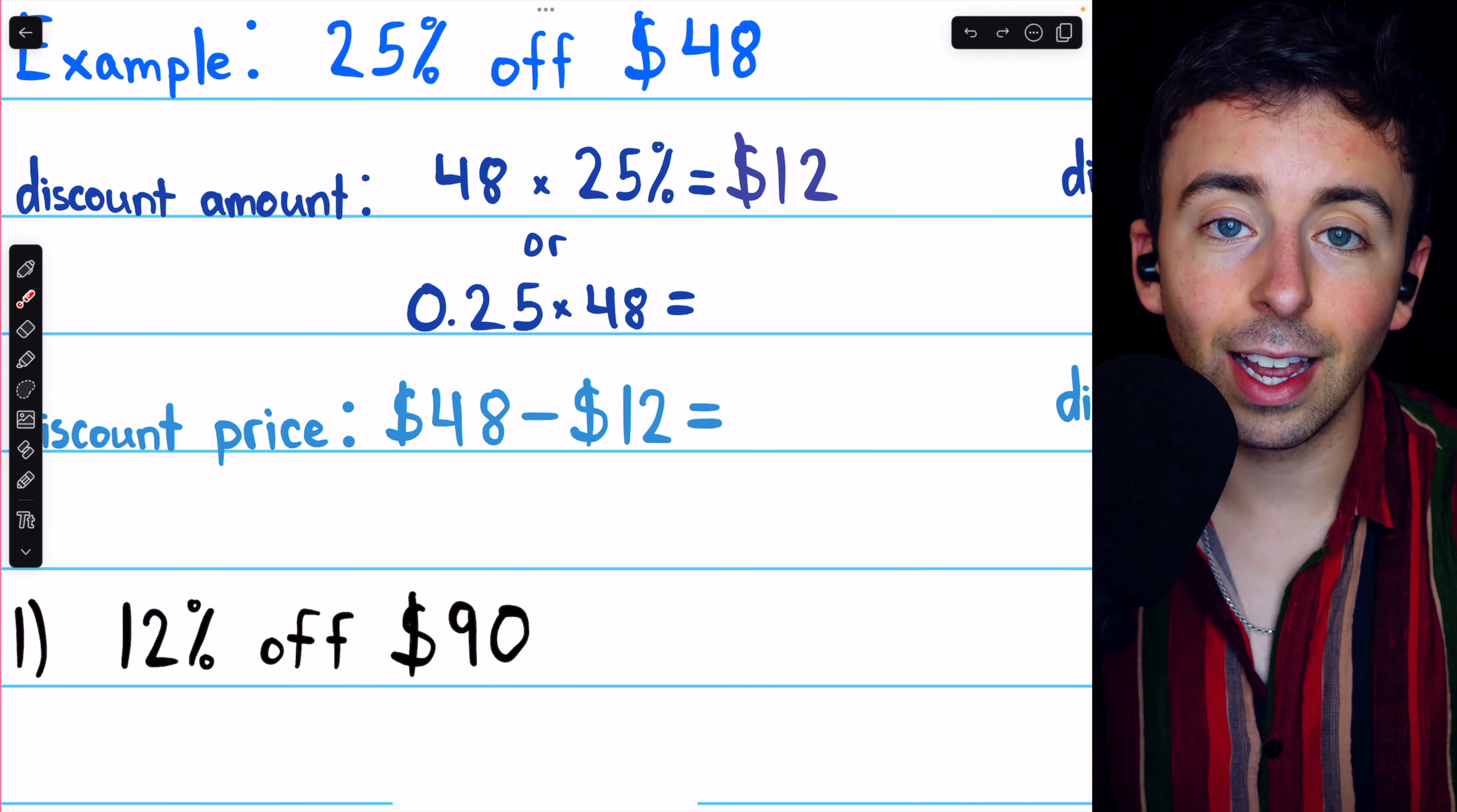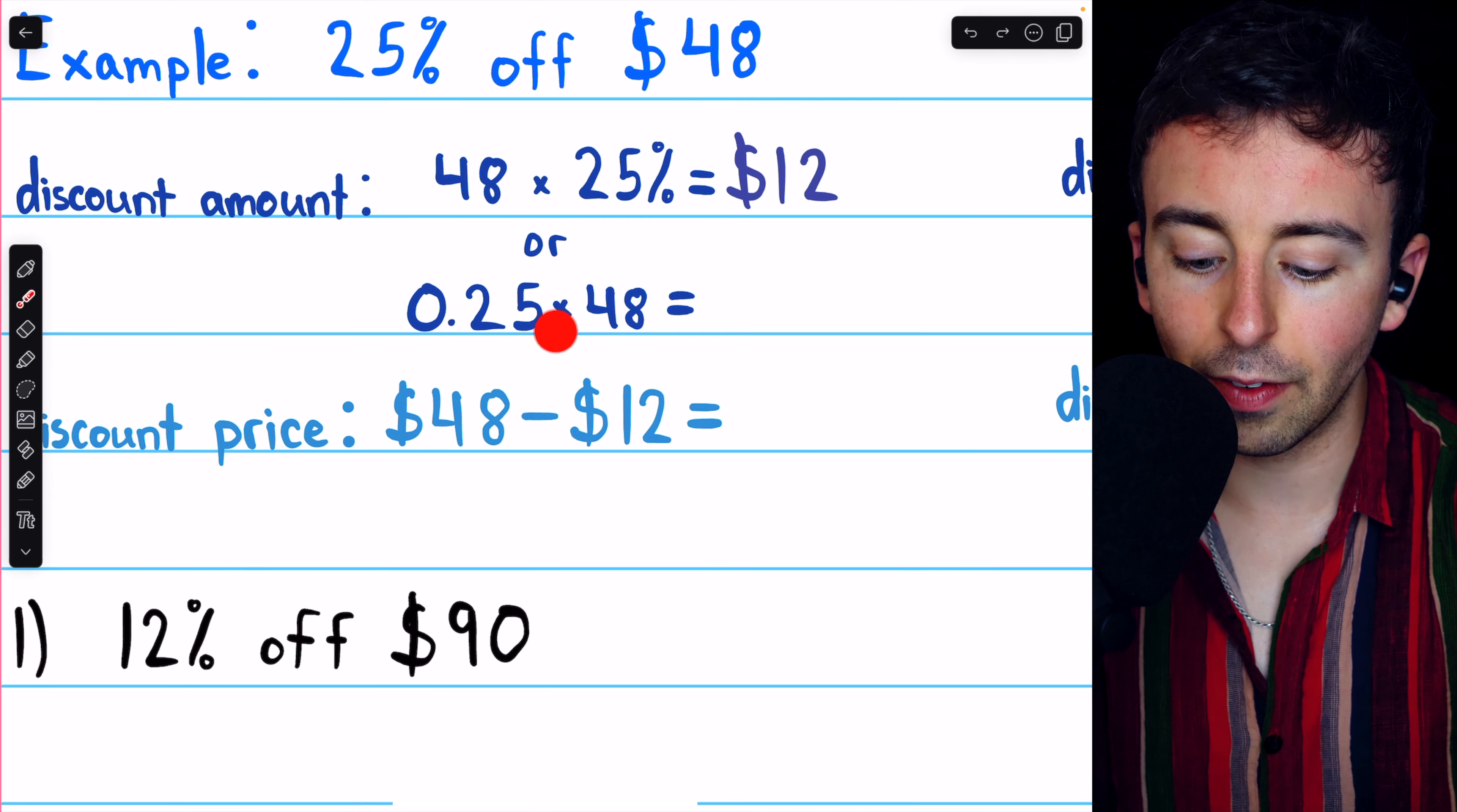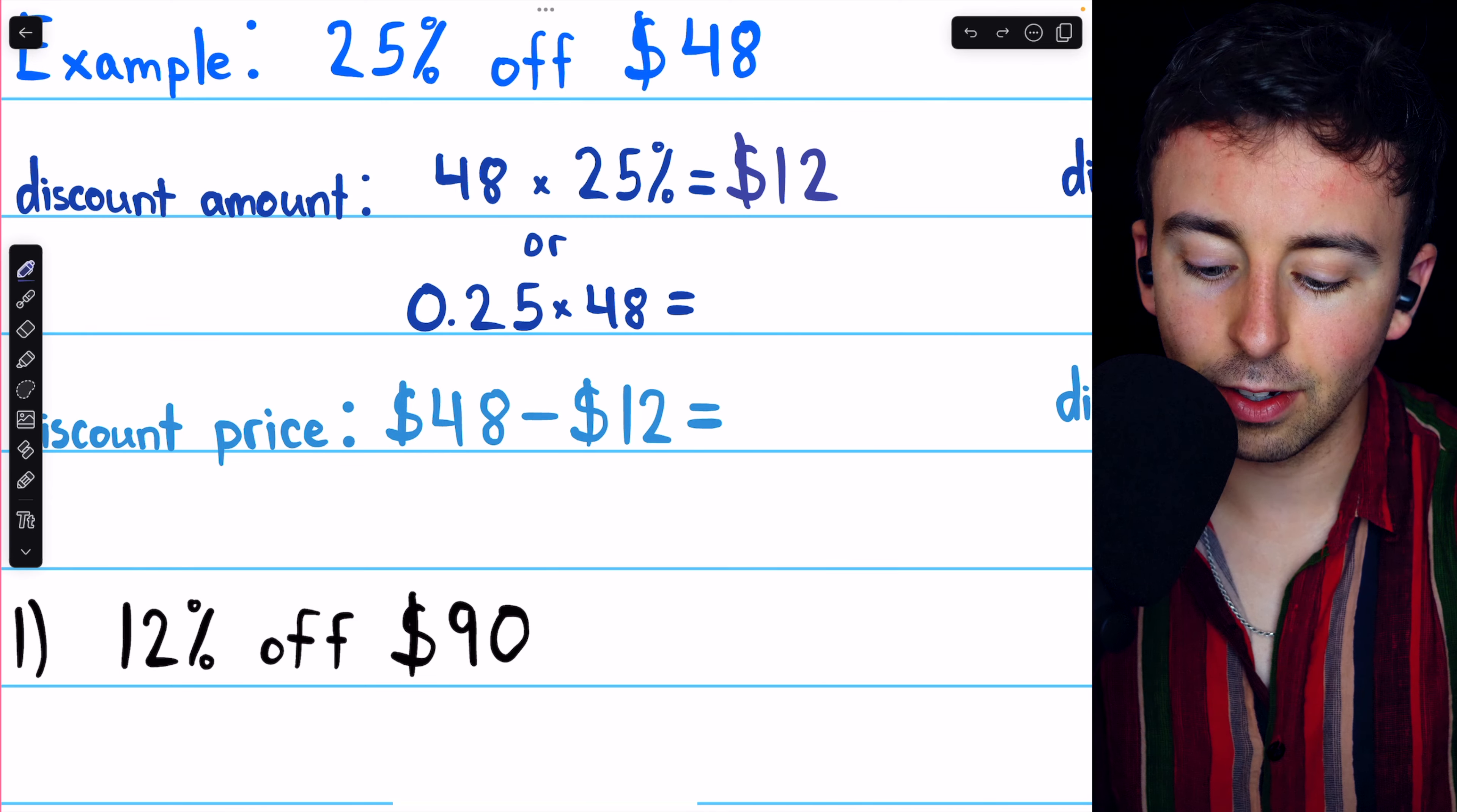That's 25% as a decimal. And then you can just punch that into a calculator, 0.25 times 48, and again, you're going to get 12.